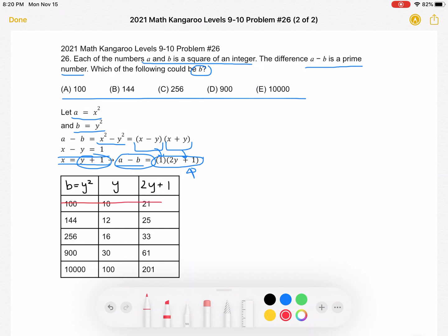If B is 144, y is 12. 2y plus 1 is 25, which is not a prime number.